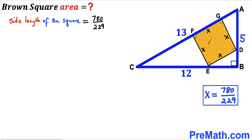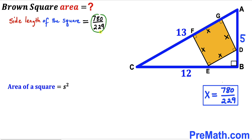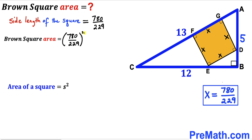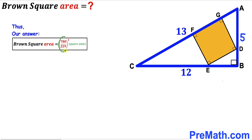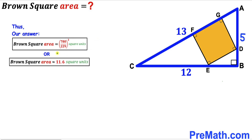Now we calculate the area of the brown square. Recalling the formula: area equals side squared. Our side length is 780 over 229, so the area equals (780 over 229) squared square units, which is approximately equal to 11.6 square units.